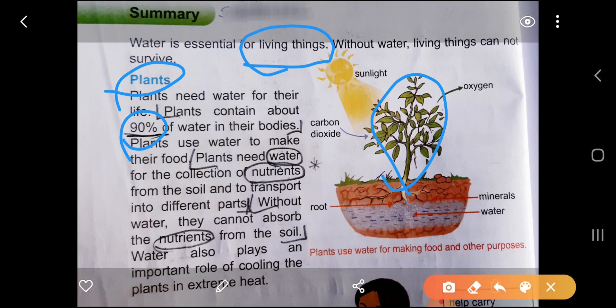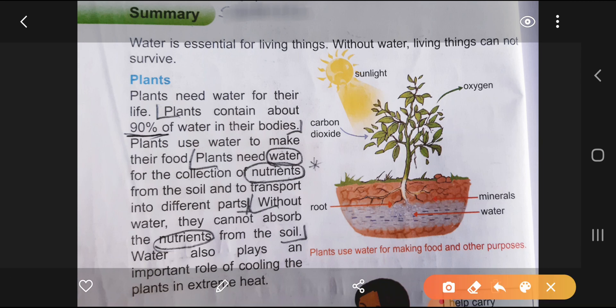Here is water body, so plants absorb water from here. And another important thing, plants need water for collection of nutrients, nutrients that is a substance that is very important for plant body.